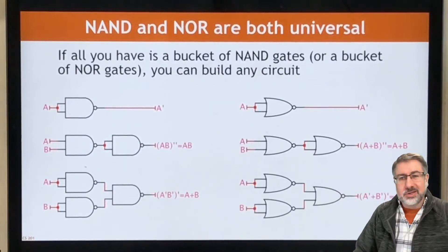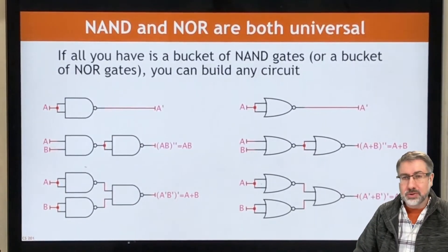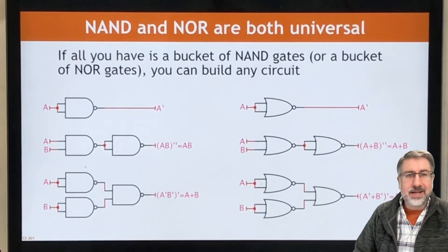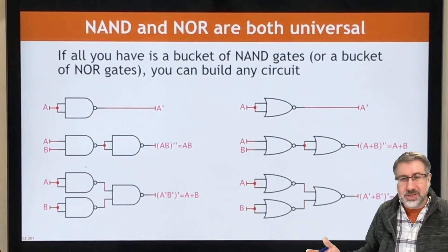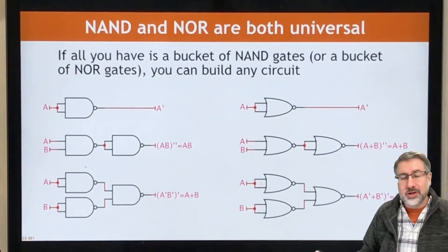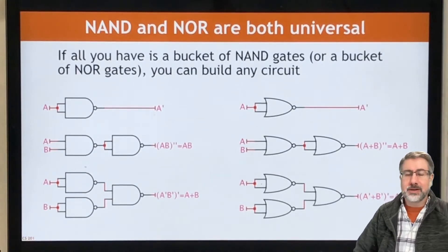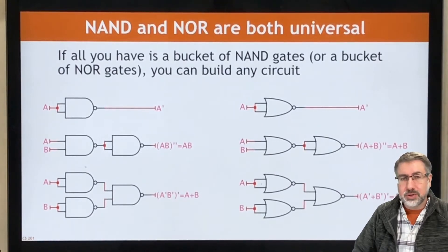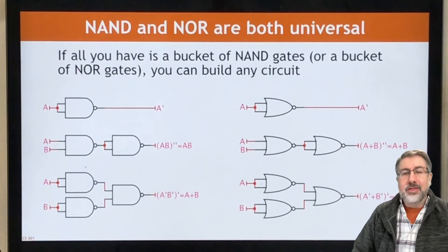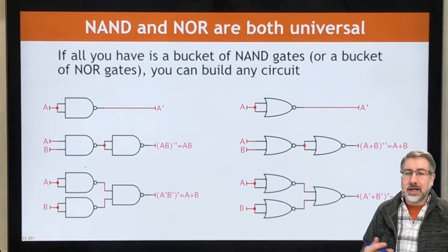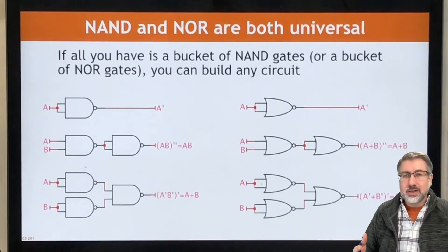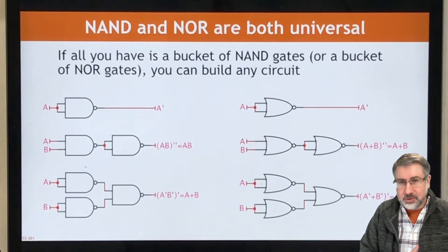So here is a quick slide that shows a very direct proof that NAND and NOR are both universal. Which means if all you have is NAND gates, you can build anything. If all you have is NOR gates, you can build anything. We do this in a fairly straightforward way. First, we show that you can produce an inverter, then we show that you can produce a gate by itself, and then we know you can produce the other quality of the gate as well.